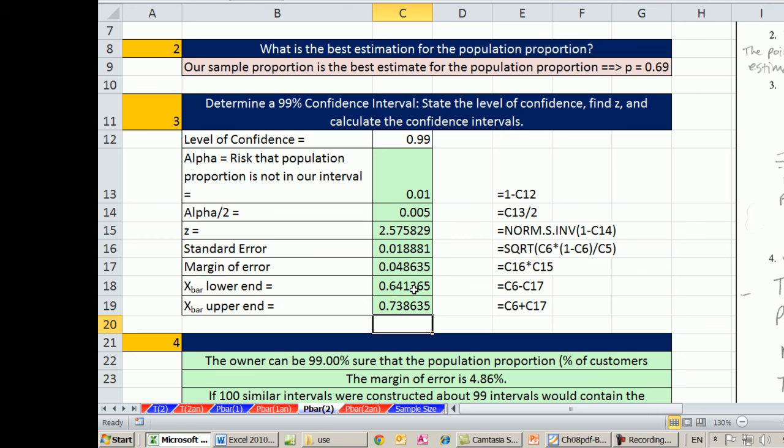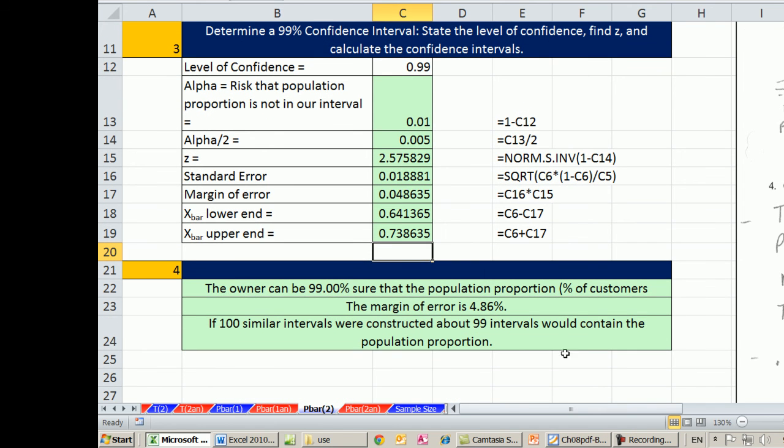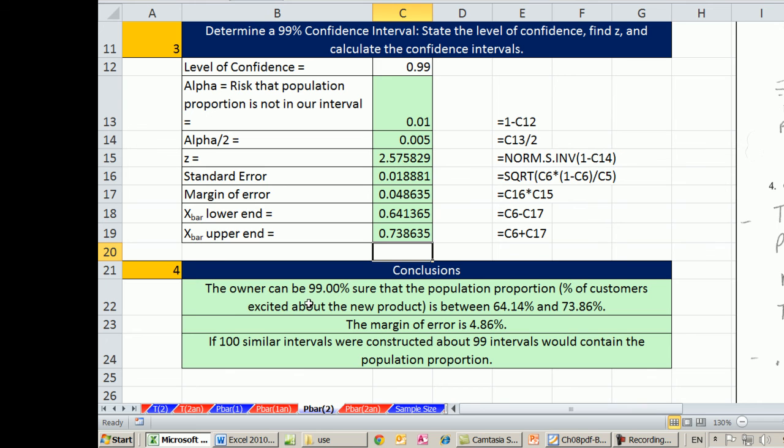So we have two values, a lower and an upper, that span an interval where we're 99% sure that our population proportion exists. So the owner could be 99% sure that the population proportion, percentage of customers excited about the new product, is between about 64% and about 74%. The margin of error is about 5%, right? So there's our margin of error. So pretty good proportion of customers that are excited. And so then the owner says, well, hey, maybe we should launch this product.